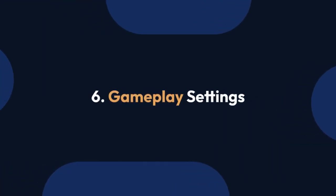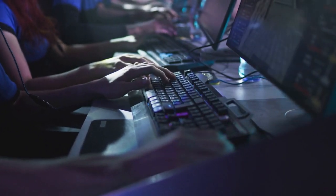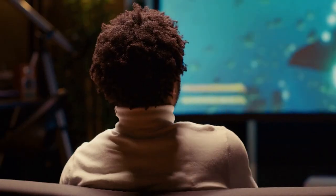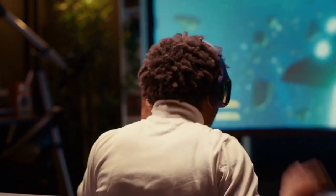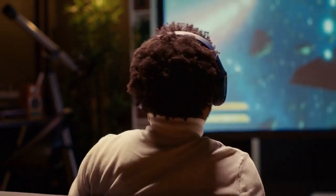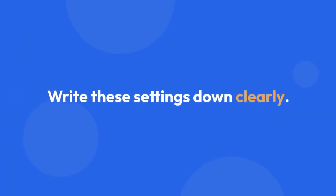Step 6: Gameplay settings. Don't forget about gameplay settings. This includes things like your mouse sensitivity, raw input, aiming settings, and any other preferences that affect how the game feels. Write these settings down clearly.